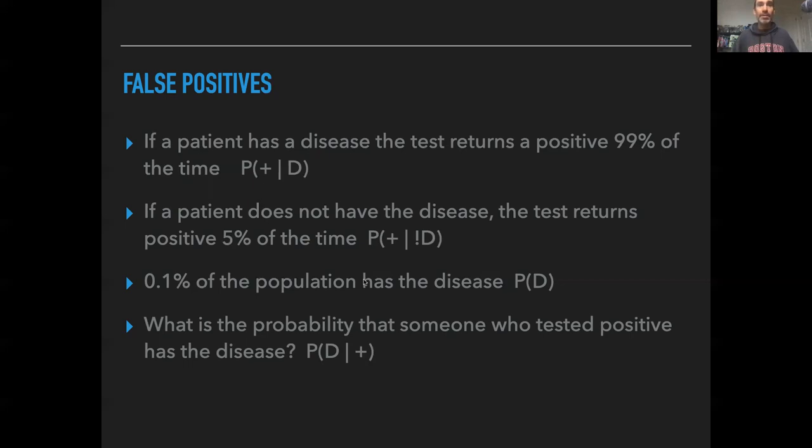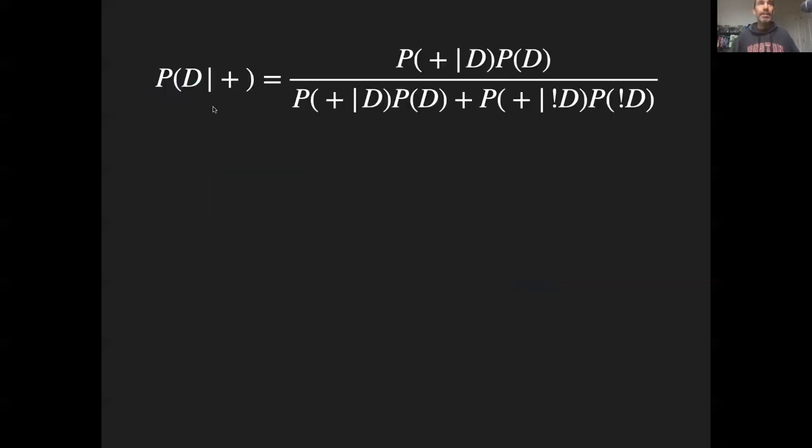So to get from one to the other, we need to use Bayes' theorem. The probability that you have the disease given that you tested positive is the probability that you test positive given that you have the disease times the probability that you have the disease. That's just coming from Bayes' theorem. And then in the denominator, we have that sum or integral where, in this case, since it's discrete, we're just going to sum over the possible cases. So we have the probability that you're positive given that you have the disease times the probability that you have the disease, and we also have the other case, the probability that you're positive given that you don't have the disease times the probability that you don't have the disease.